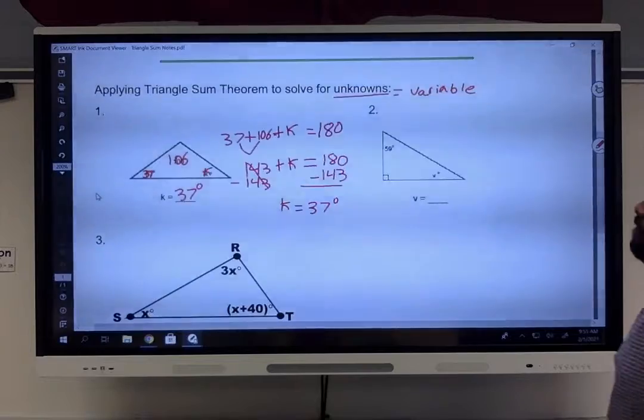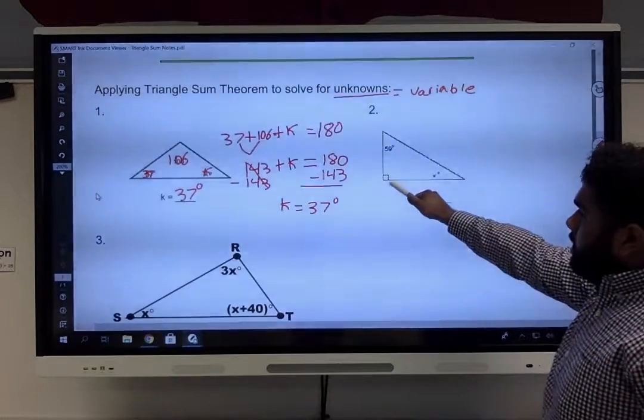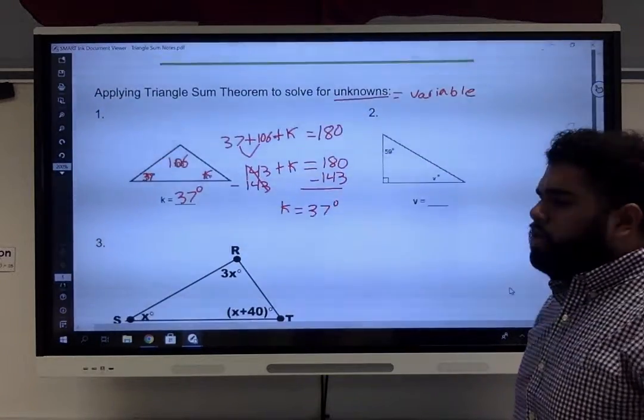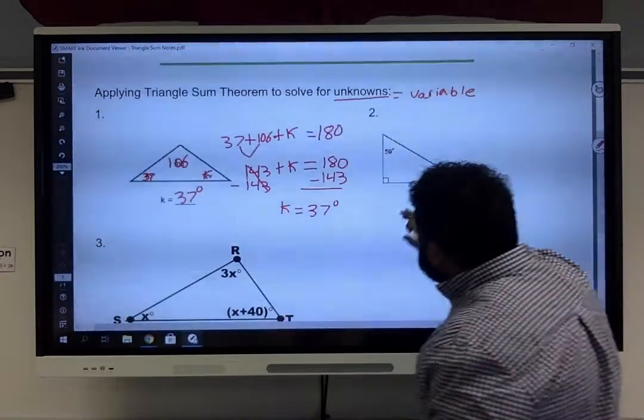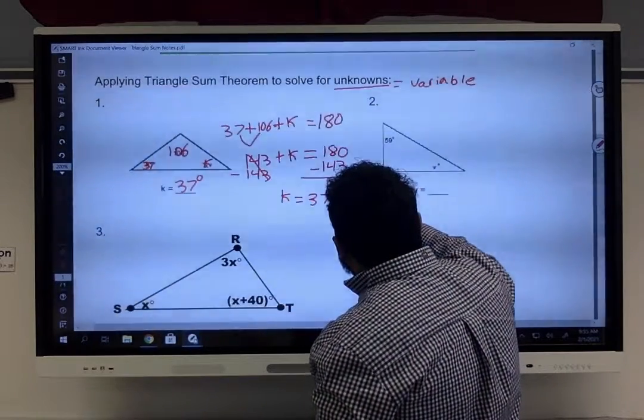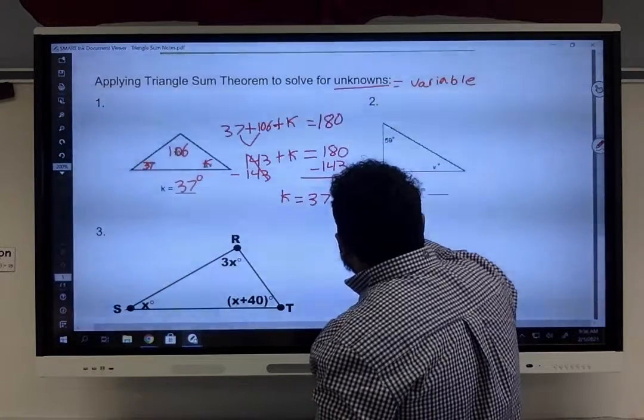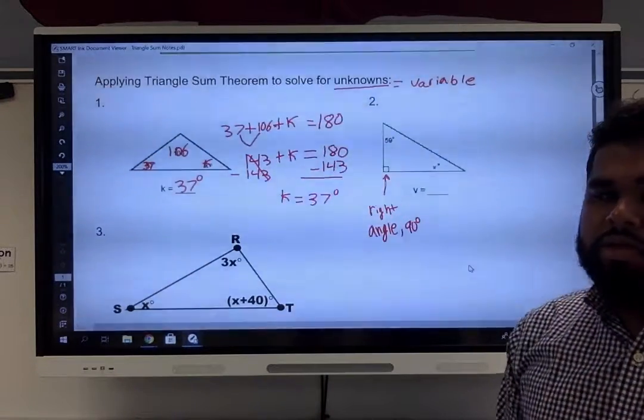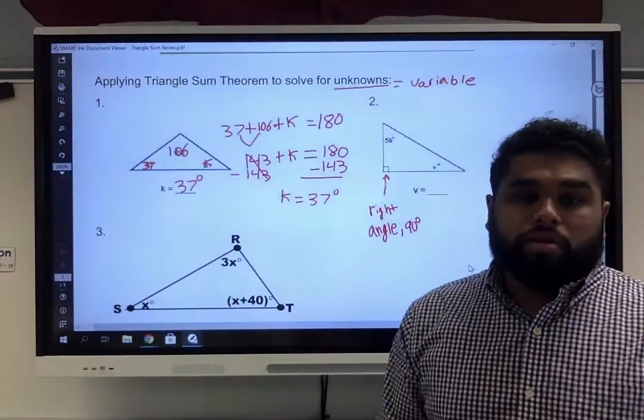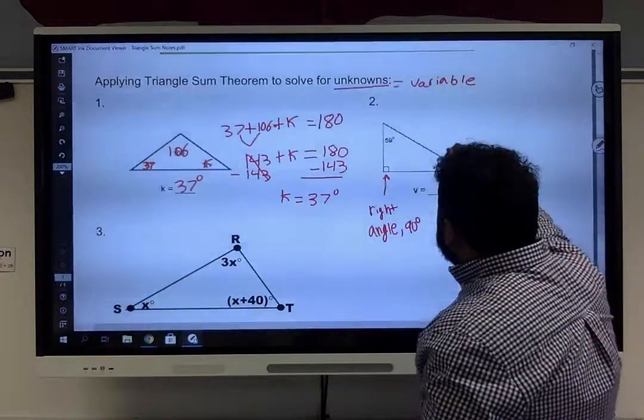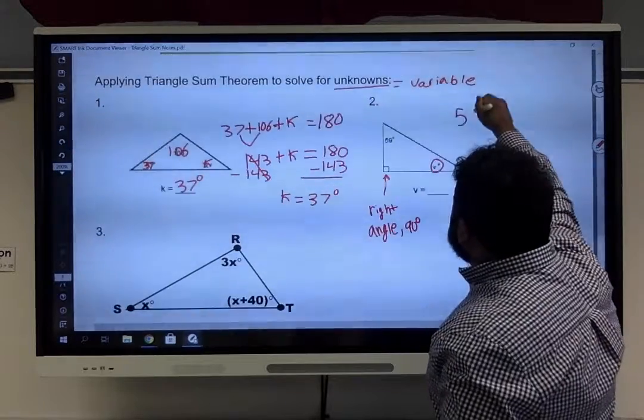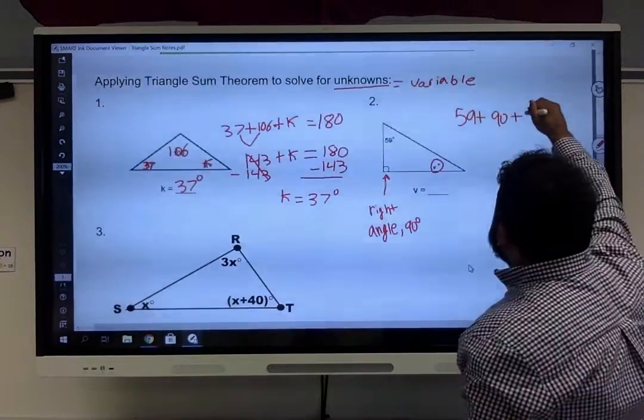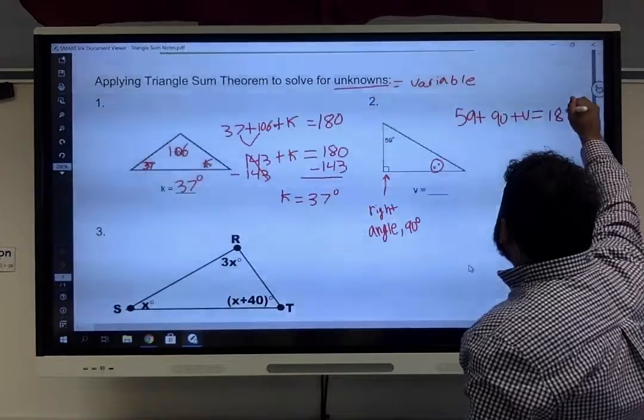Now, over here, we have an angle with one number, and remember, what does this little box in a corner for an angle measurement mean? Right here, this means it's a right angle. So remember, that little box means that it's a right angle, and a right angle will always equal 90 degrees. So now we have, we're looking for V, so so far we have 59 plus 90 from that right angle, plus V equals 180 degrees.